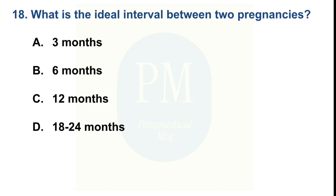What is the ideal interval between two pregnancies? Option A: 3 months. Option B: 6 months. Option C: 12 months. Option D: 18 to 24 months. The correct option is Option D — 18 to 24 months.